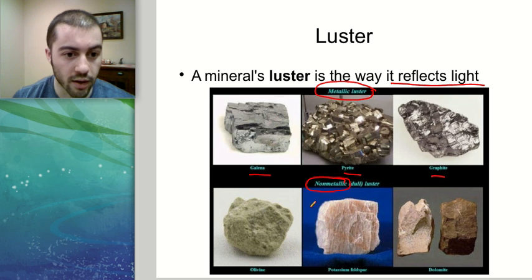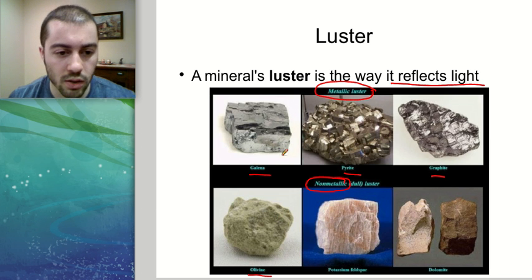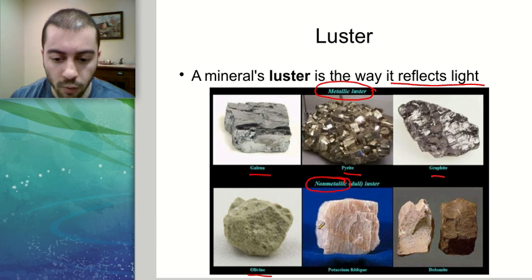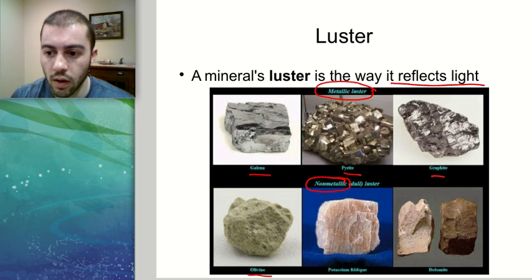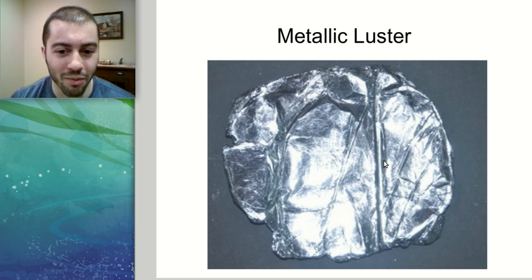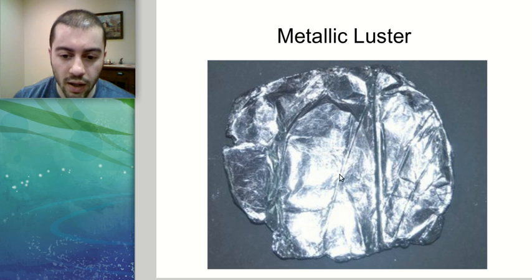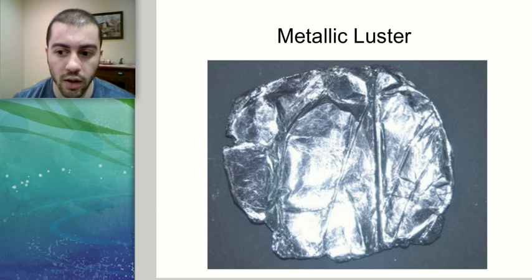Non-metallic minerals like olivine are not reflecting the light nearly as much as metallic ones — they simply don't look like metals. A mineral with metallic luster has a very obvious characteristic where it reflects light in a shiny manner that really just looks like it was a metal, almost like crumpled aluminum foil.